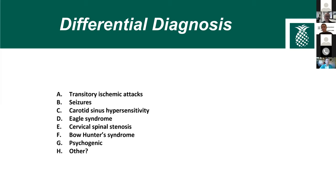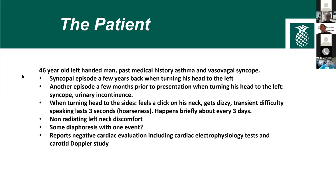He has some non-radiating left neck discomfort, possibly some diaphoresis with one event. He's seen cardiologists and had cardiac electrophysiology tests and a carotid Doppler study — all looked okay. I wanted to get a sense from the group of what the most likely diagnosis is based on that description alone, so a poll was submitted. Dr. Saxton asked whether he ever had a chest X-ray suggesting bilateral cervical ribs or a rib anomaly — a good thought, and he likely did have one.